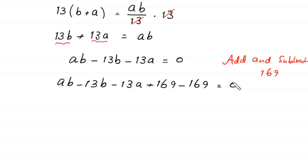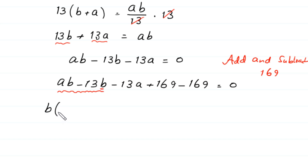Now, from these two terms AB minus 13B, we can factor out B. Like this: B times (A minus 13). And from the terms negative 13A plus 169, we factor out negative 13, giving negative 13 times (A minus 13).